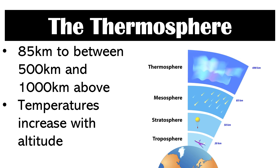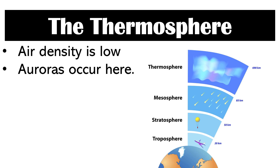Next is the thermosphere. It starts 85 kilometers above the surface, up to 1,000 kilometers. Temperature increases in this layer as you go higher, because it absorbs X-ray and UV radiation from the sun. The air density is also low in this layer, which is why this layer is said to be the start of outer space — outer space is said to start 100 kilometers above the surface. Lastly, remember that the auroras occur in this area.